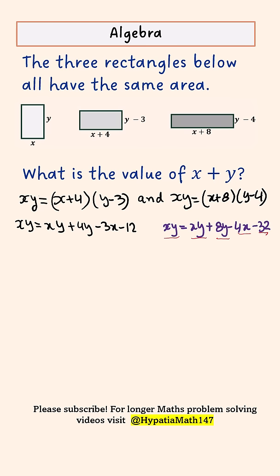So the xy's cancel off from both sides. So we are left with 4y minus 3x equals 12, and 8y minus 4x equals 32.